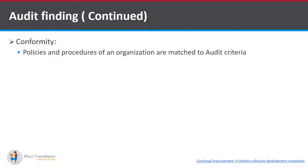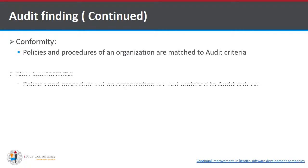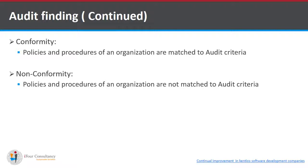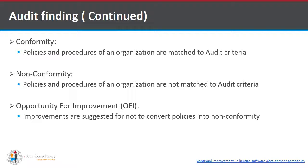A positive finding — conformity — is when the policies and procedures of an organization are matched to the audit criteria. The audit criteria can be any reference, for example ISO 27001:2013. A non-conformity is a negative audit finding, which is when policies and procedures are not matched to the audit criteria. An observation is an opportunity for improvement, suggested to prevent policies and procedures from converting into non-conformity.